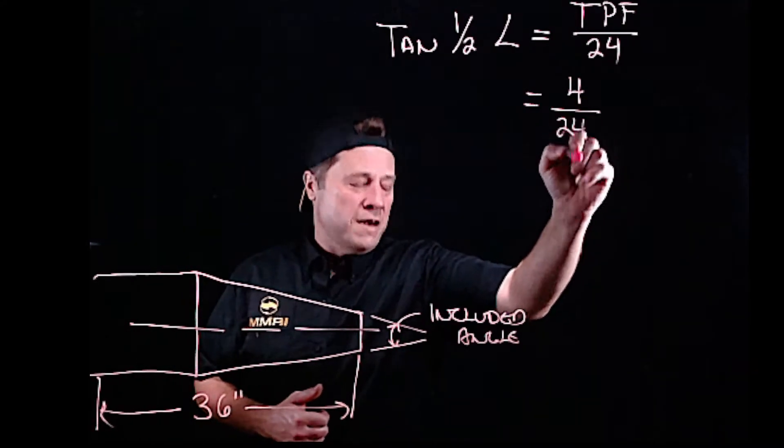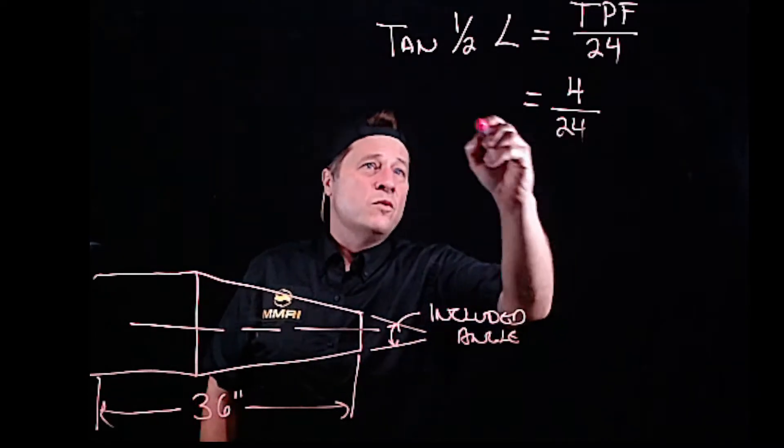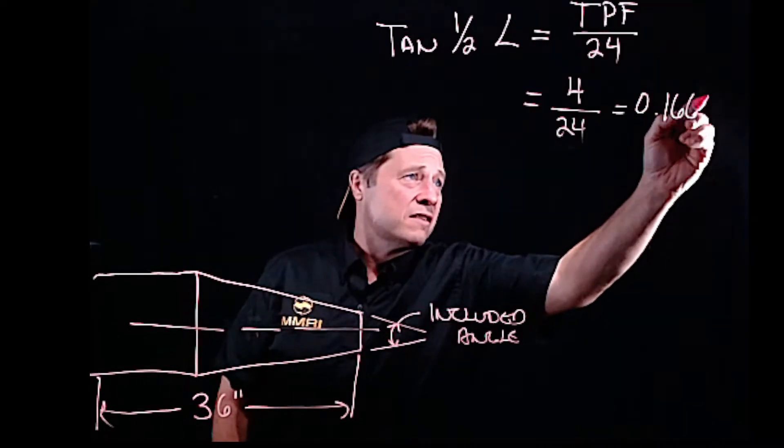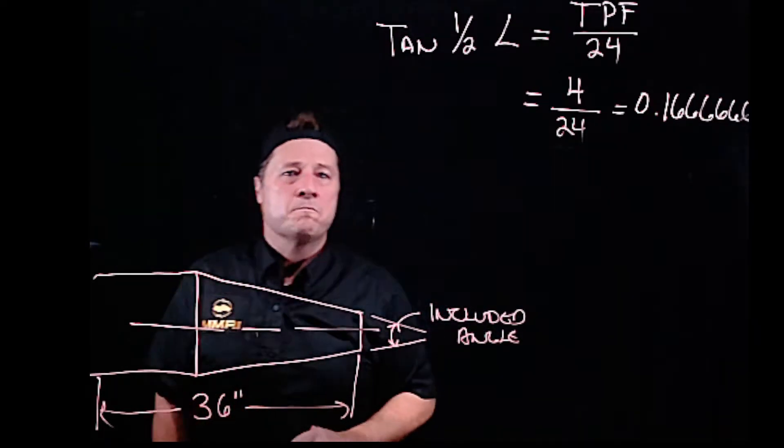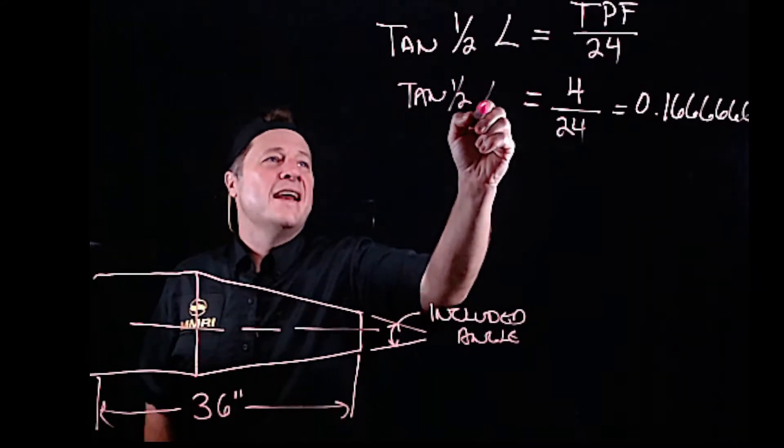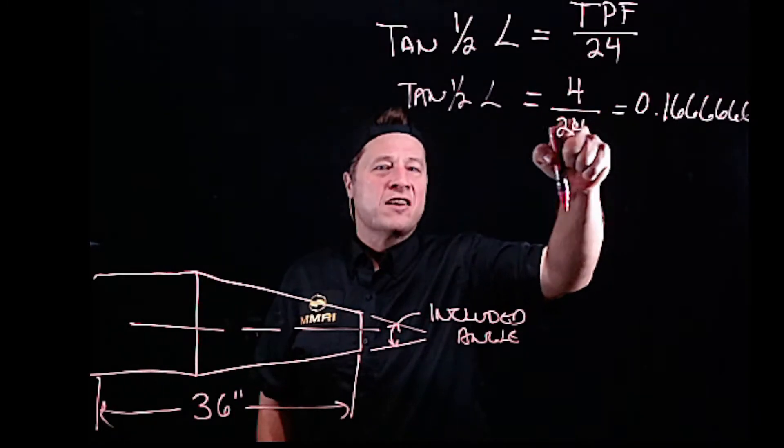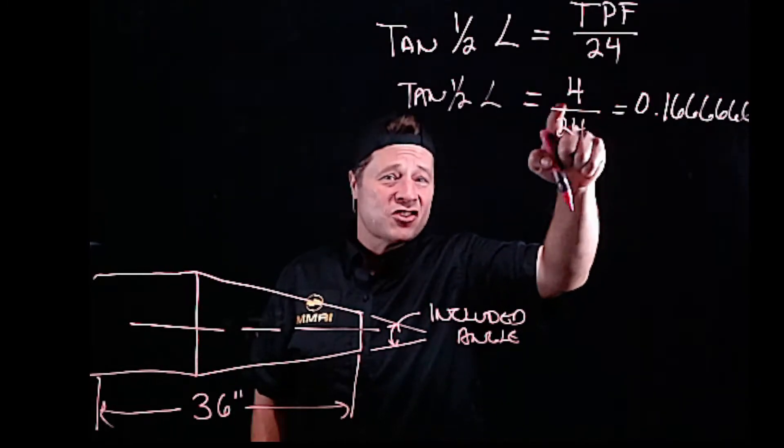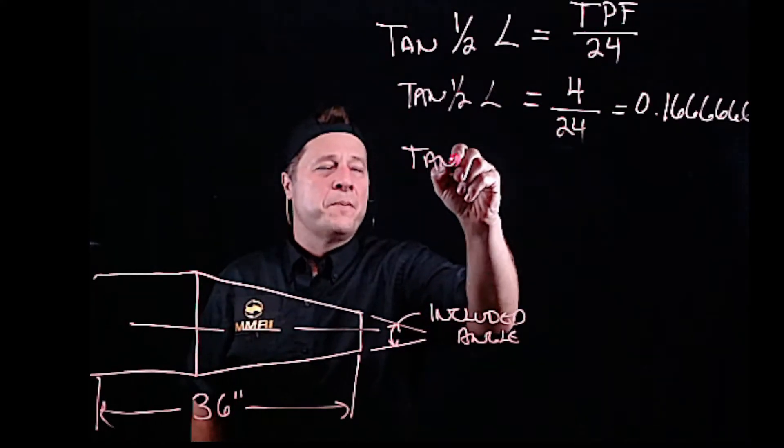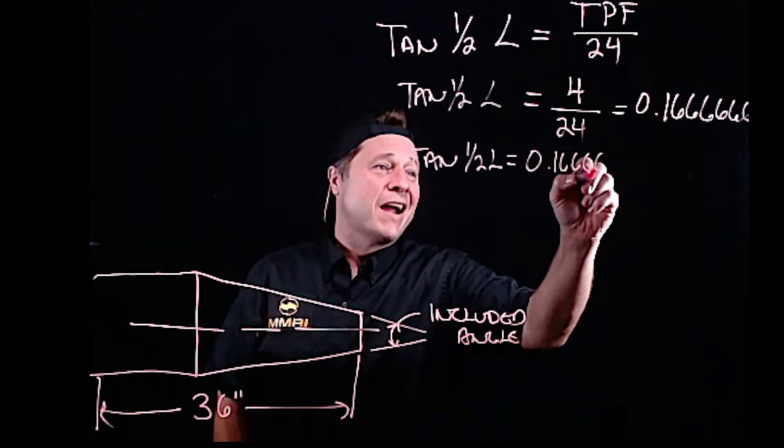You solved it. It's 4, let's say. 4 divided by 24 equals 0.1666666, et cetera. Tangent of half the angle is equal to this common fraction. And when I solve this common fraction, tangent of half the angle is now equal to this decimal fraction.